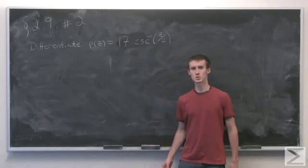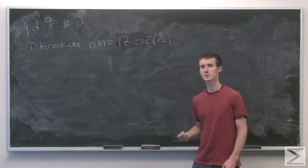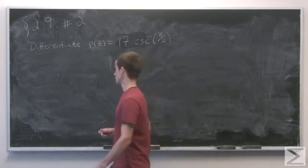All right, problem number two of section 2.9. We're asked to differentiate a function involving the inverse cosecant. Now, this is a chain rule problem.